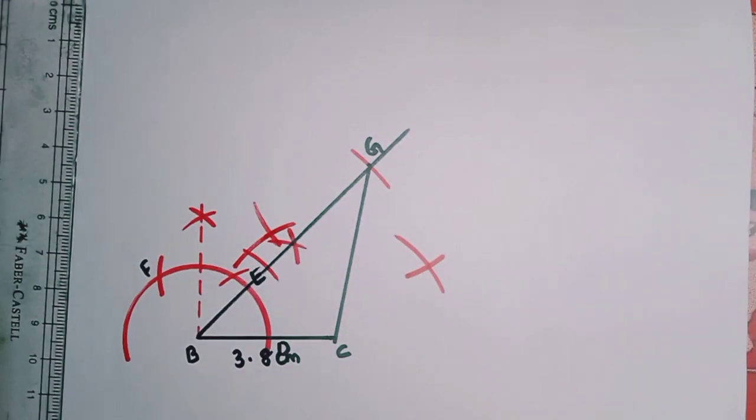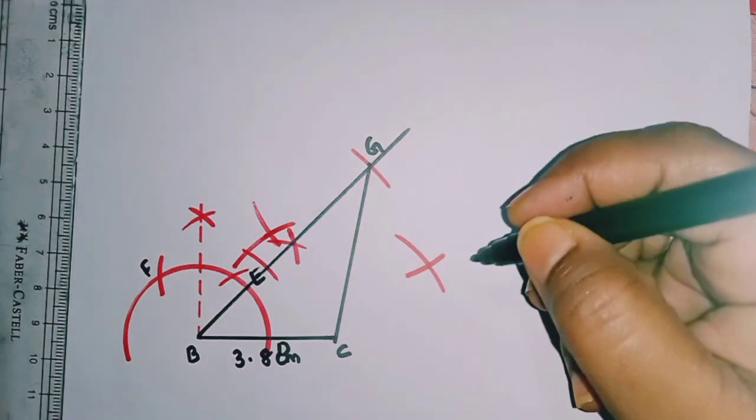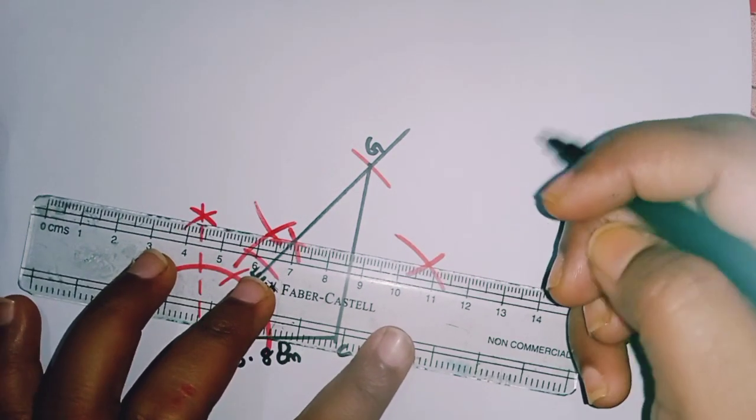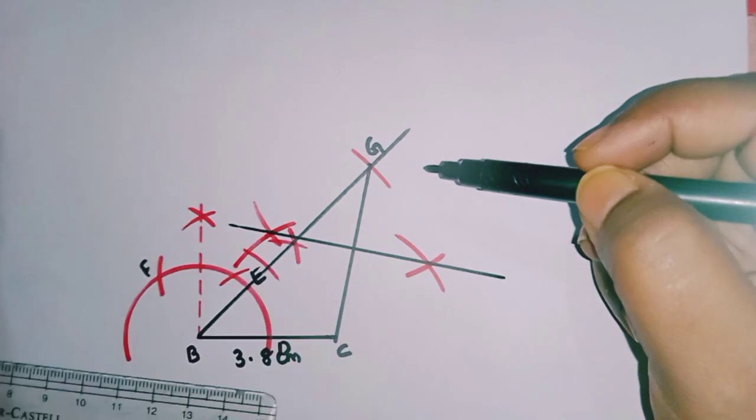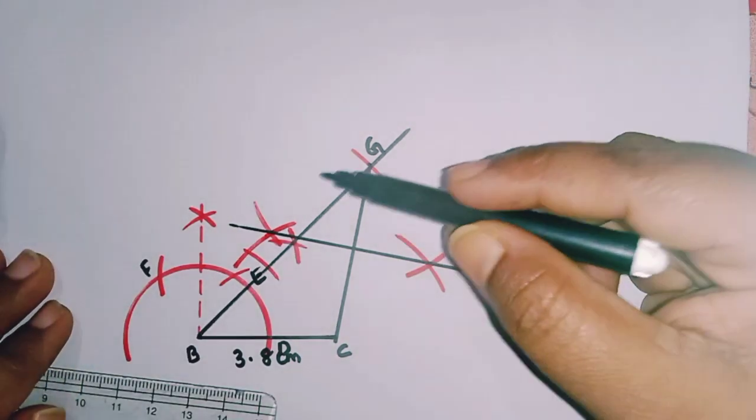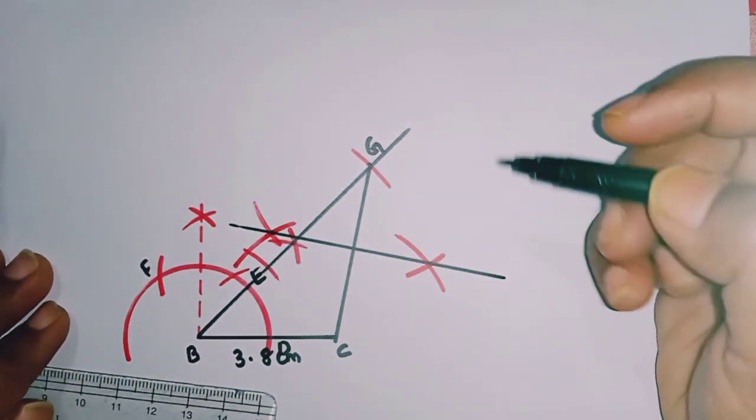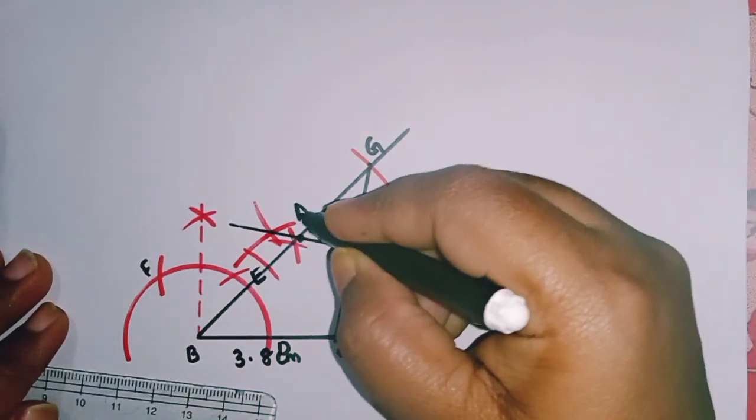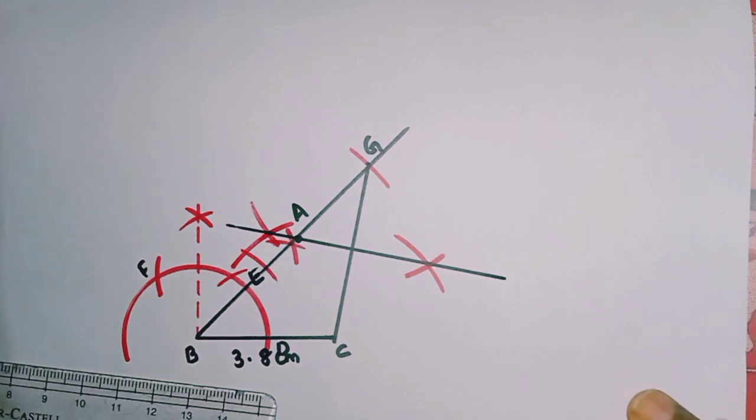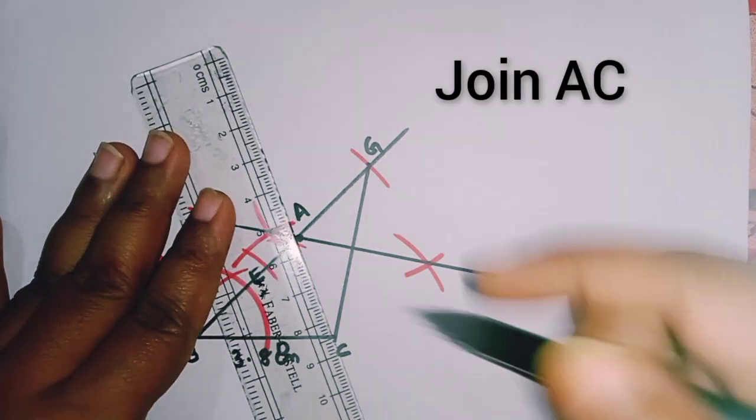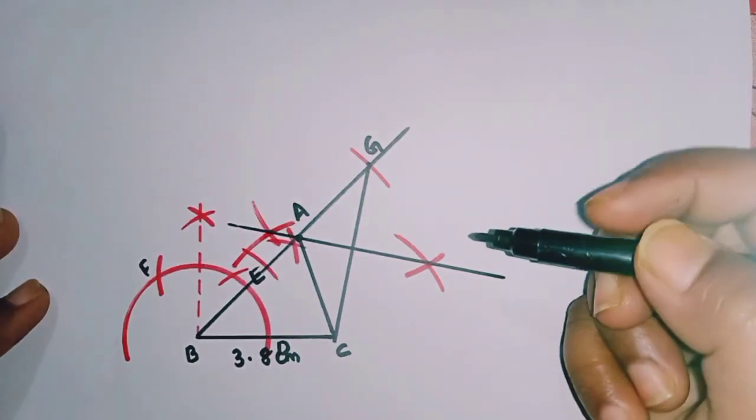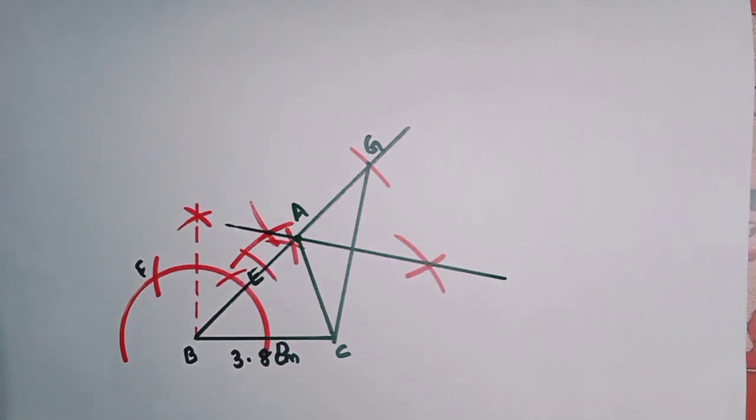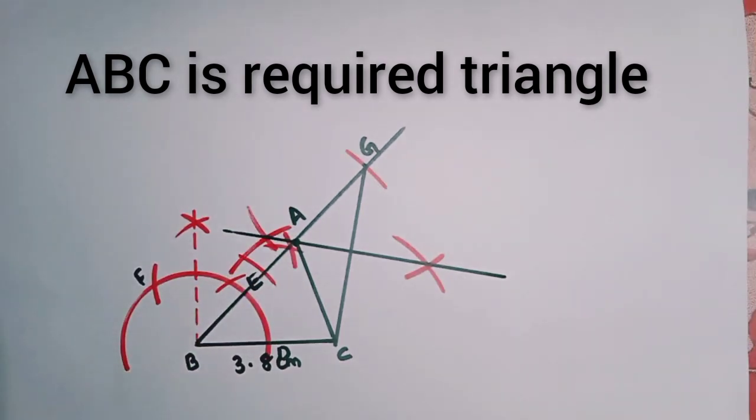So now you can see both the arcs are meeting. Now you have to draw a line wherever both the arcs meet. So now you can see the line has been bisected and now this is point A. This is point A. So now this is the required point. Now you have to join AC. So actually this is the triangle which is required. A, B, C is the required triangle.